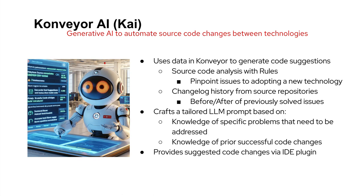Let's take a look at how Konveyor AI uses the RAG approach. Konveyor uses its code generation suggestions together with static code analysis — which has been part of Konveyor for a long time — to pinpoint issues when adopting a new technology. For example, if you have Java EE and want to move JavaX to Jakarta EE, Konveyor AI does the static code analysis, tells you where the problem exists, crafts a tailored prompt with that knowledge, contextualizes it, and sends it to the LLM. The LLM then generates the code and sends it back into the IDE so the developer can accept or reject the changes.